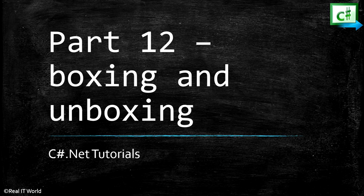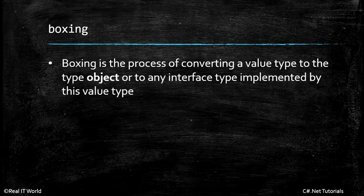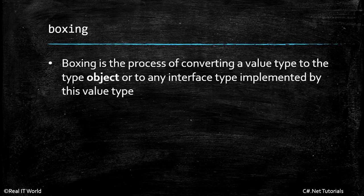Welcome to csharp.net tutorials, part 12: boxing and unboxing. Boxing is the process of converting a value type to the type object. We previously saw that in object type, we can store any type of data inside object. So if we store value type data inside object, we can say that it is boxed.